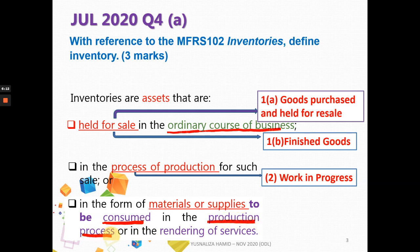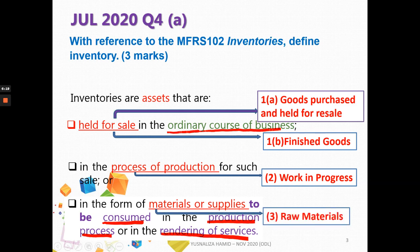These materials consumed in the production process or in the rendering of services are items like raw materials. For example, if you are manufacturing salted fish, the raw material is the fish and the finished product is the salted fish — so raw materials are being consumed in the production process.